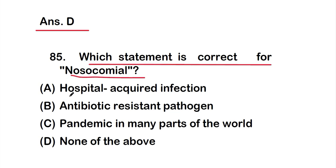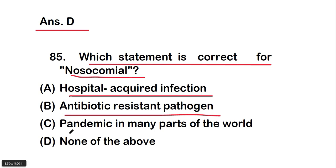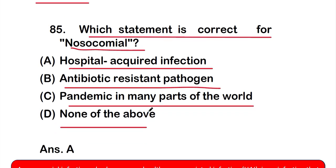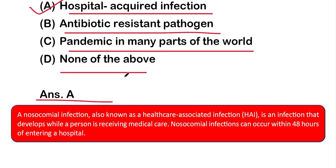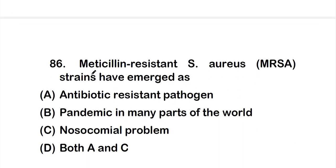Question number 85: Which statement is correct for nosocomial? Option A: hospital-acquired infection, option B: antibiotic-resistant pathogen, option C: pandemic in many parts of the world, option D: none of the above. The correct answer is option A — hospital-acquired infections. Nosocomial infection, also known as healthcare-associated infection, is an infection that develops while a person is receiving medical care and can occur within 48 hours of entering a hospital.